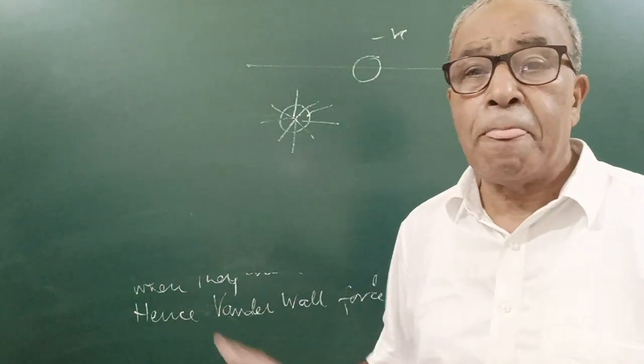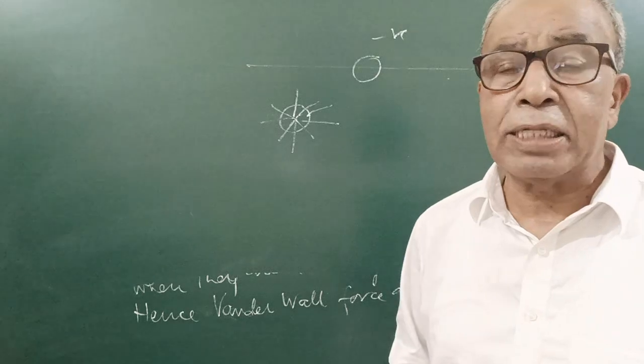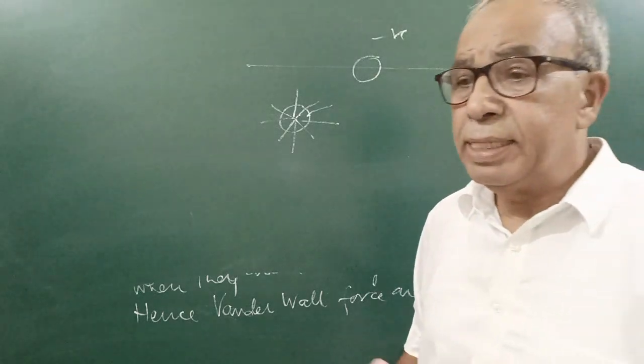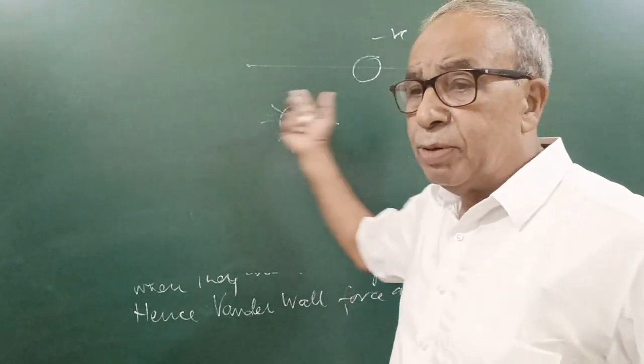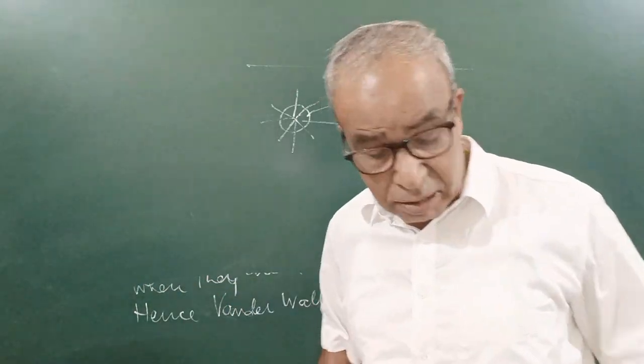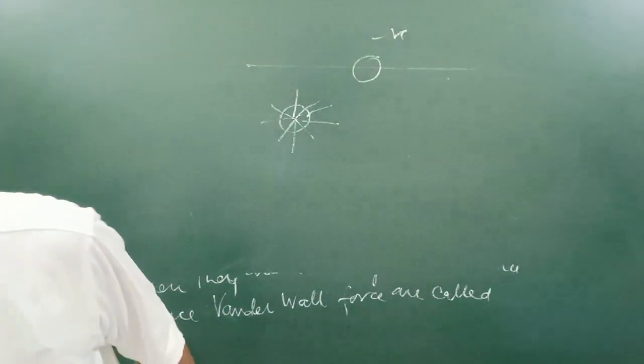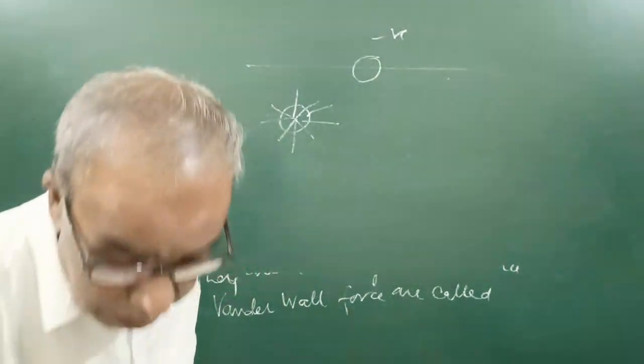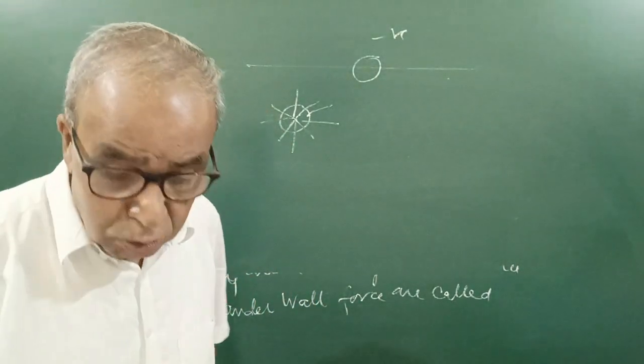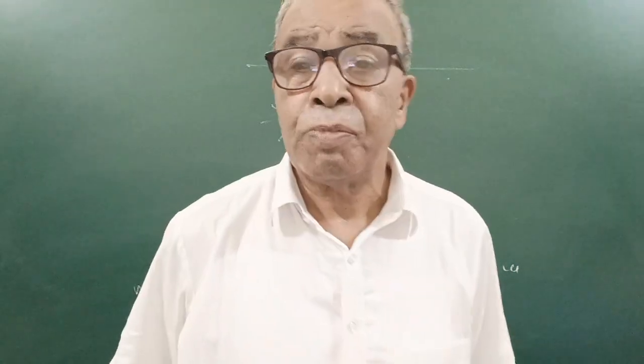And that is why the surface of liquid remains under certain tension. Because for a given volume, the surface area of a sphere is less. They try to decrease surface. And due to this decrease in surface, the surface of liquid remains under some tension.